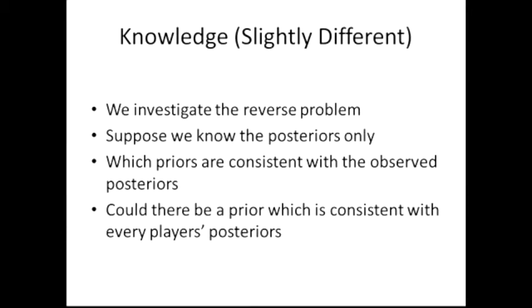I'm going to be working with the reverse question: supposing that we don't know what priors are, and we only observe each player's posteriors — their after-the-fact information, what they know after receiving private information. We want to think about which priors are consistent with these observed posteriors, and in particular whether there is some prior consistent with every player's posteriors.